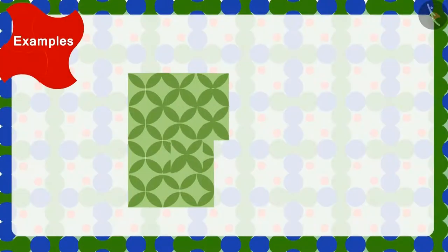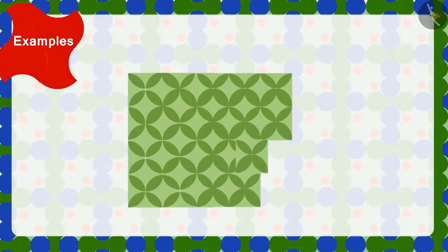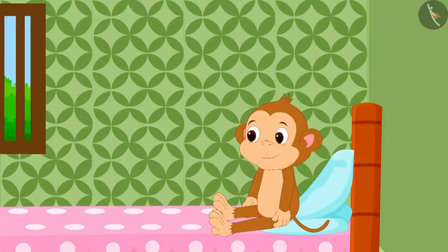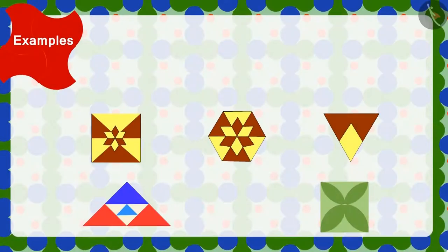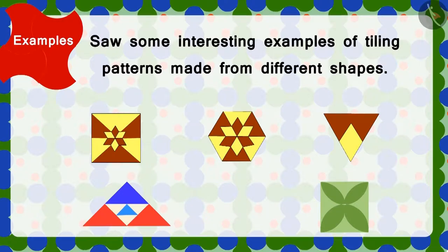Wow! Children, you have completed it correctly. Babban has woken up. Look how happy he is looking at his beautiful wall. Children, in this lesson, we saw some interesting examples of tiling patterns made from different shapes.